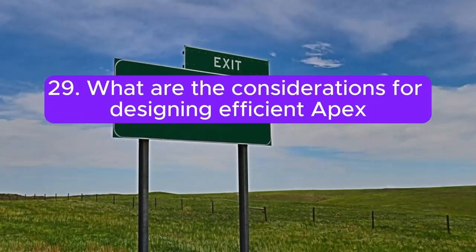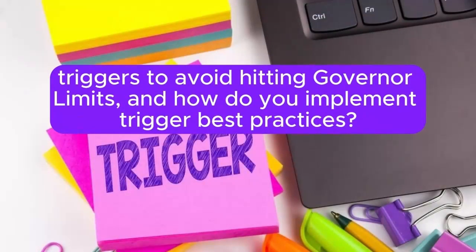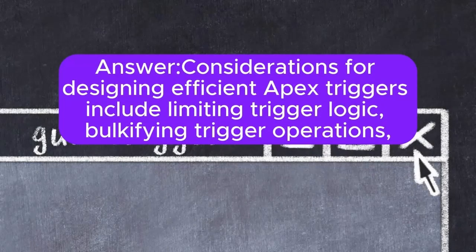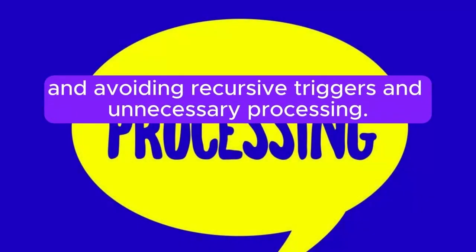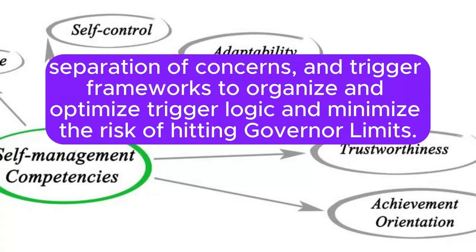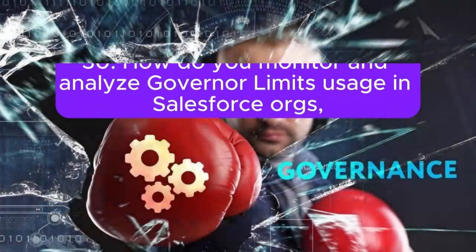Question 29: What are the considerations for designing efficient Apex triggers to avoid hitting governor limits, and how do you implement trigger best practices? Answer: Considerations for designing efficient Apex triggers include limiting trigger logic, bulkifying trigger operations, and avoiding recursive triggers and unnecessary processing. You can implement trigger best practices such as trigger handler patterns, separation of concerns, and trigger frameworks to organize and optimize trigger logic and minimize the risk of hitting governor limits.